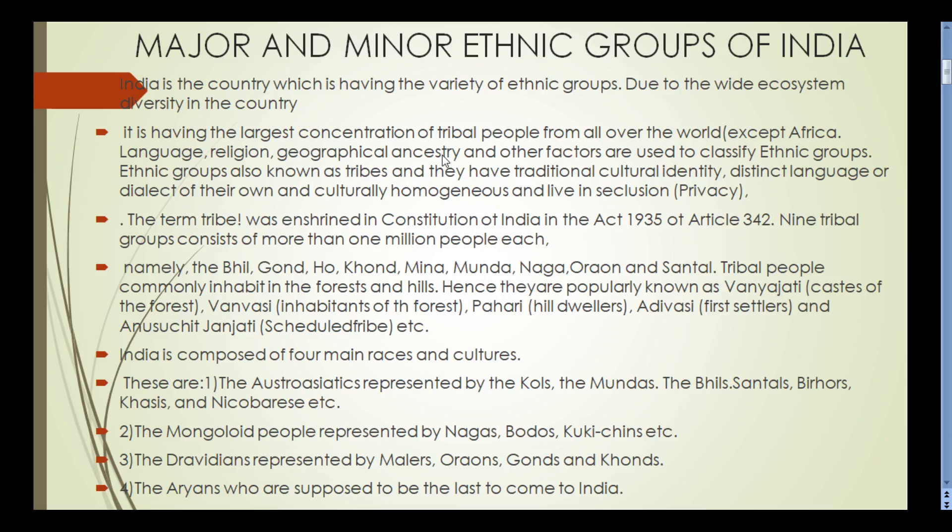Different classifications are made based on cultural activities. They have distinct languages, dialects of their own, and are culturally homogeneous, living in seclusion with their own privacy and economy. The term 'tribe' was included in the Constitution of India in the Act 1935, Article 342. Nine tribal groups consist of more than one million people each, and scheduled tribes are registered under Act 1935, Article 342.